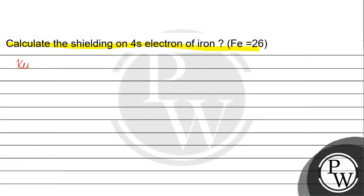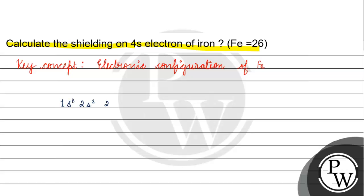The key concept for this question is the electronic configuration of iron. The electronic configuration of iron is: 1s2, 2s2, 2p6, 3s2, 3p6, 3d6, 4s2.